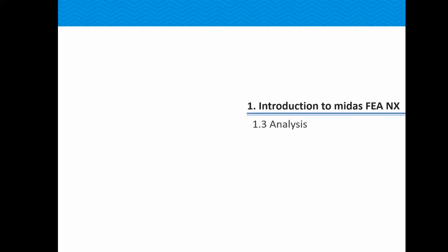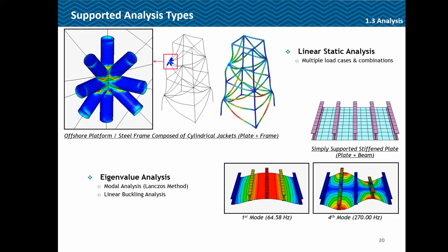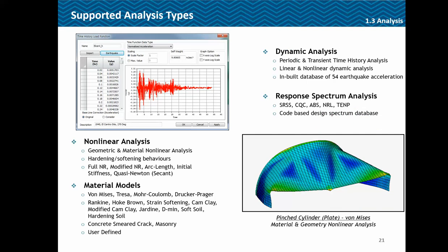Coming to analysis, FEA NX can handle simple linear static analysis where part of the model can be line elements and part plate or solid elements. It can do eigenvalue analysis — vibration or buckling analysis — and obviously dynamic analysis, whether periodic, energy, or time history, linear or nonlinear. The software has an inbuilt database for 54 earthquake spectrums, and you can also do code-based response spectrum analysis.